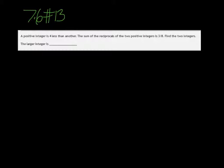So a positive integer is 4 less than another. If we let n be our integer, then we have another one that's 4 less than that.